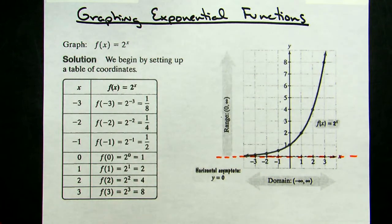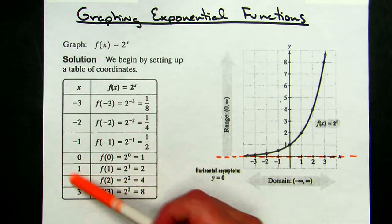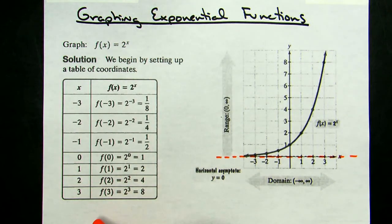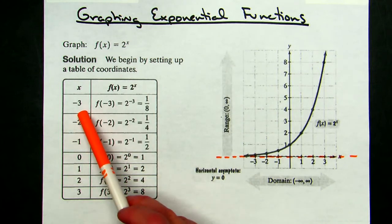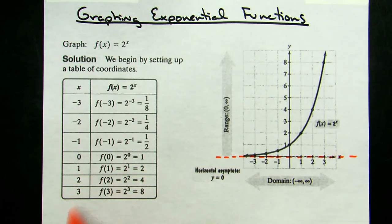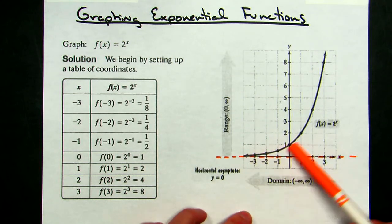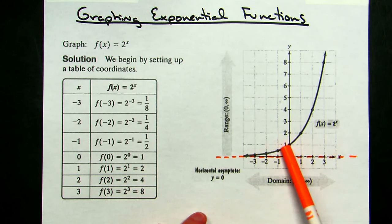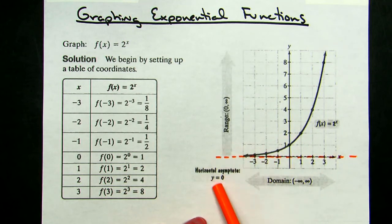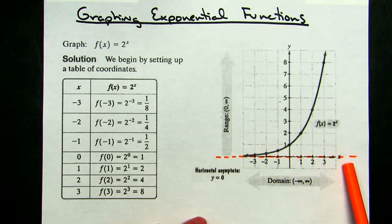If I want to graph it, I would have to create an xy table. This can be somewhat time-consuming, but not too bad as long as it's a relatively simple function. I would probably run values from negative 3 to 3, plugging them in to generate this set of numbers. Plotting each one of those points, I can see that my graph gets really close to my horizontal asymptote here at y equals 0.